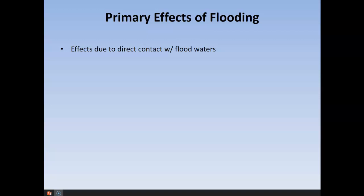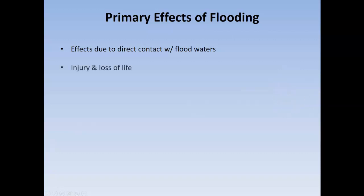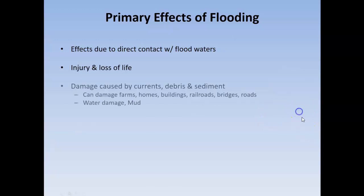Let's look at the effects of flooding. The water moving through a system is going to potentially cause damage to structures and people. When you have fast-moving water, it can impact homes, damage homes, move cars, damage structures, buildings, and roadways. There's a lot of potential impact when you have large amounts of water moving through an area.